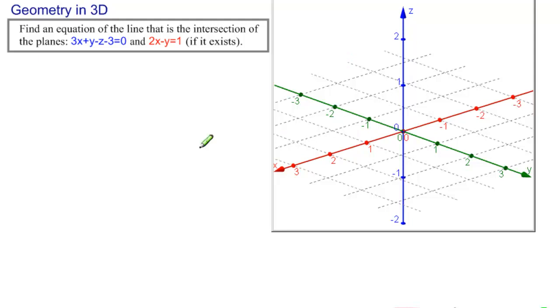Let's see this geometrically first, and then we'll work on the algebra. So let's draw the first plane. There's the first plane, 3x plus y minus z minus 3 equals 0.